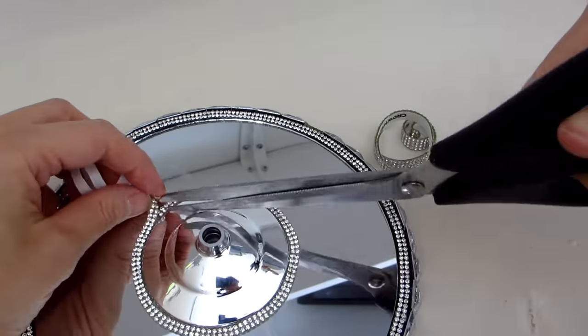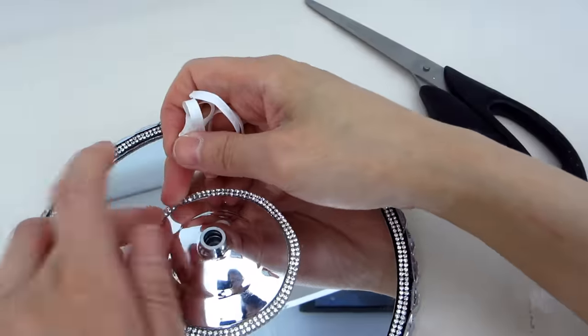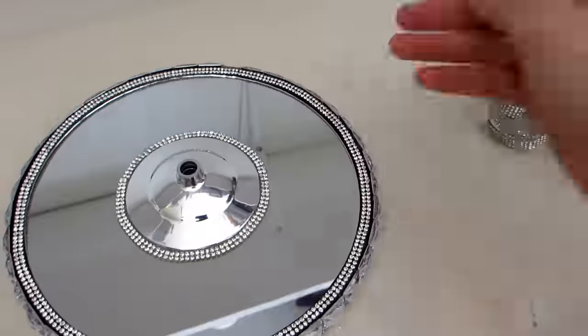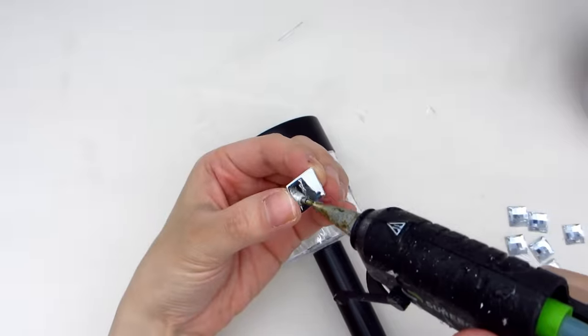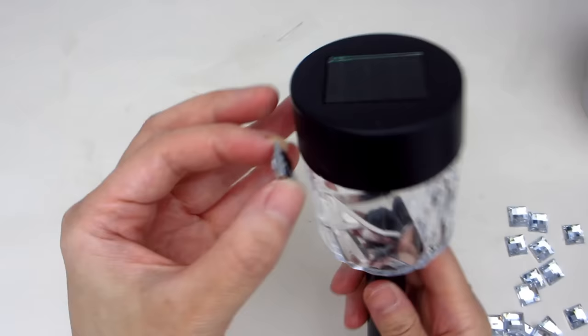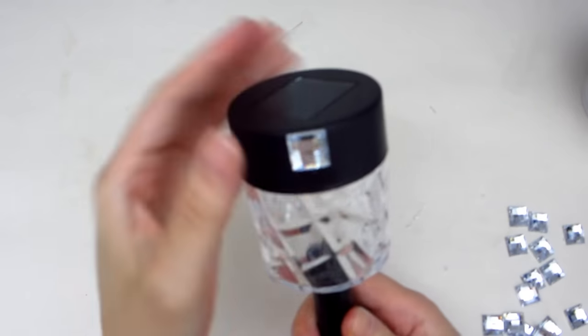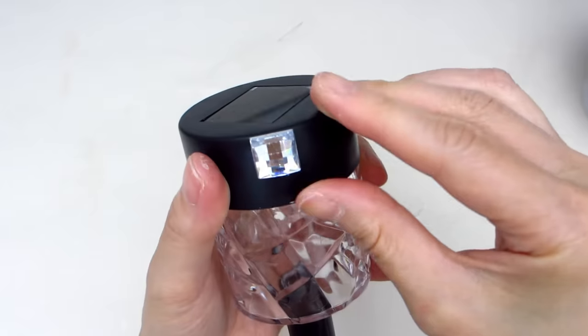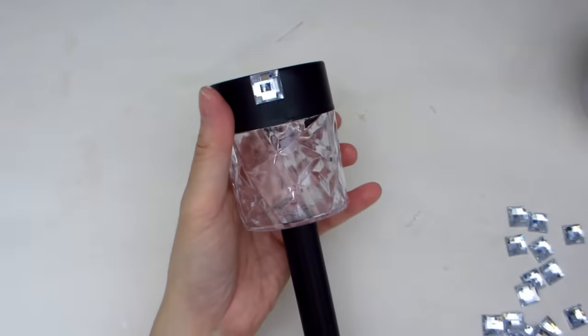This mirror base is already looking beautiful but let's put it aside for now so we can work on the solar garden stick. We're going to take a black solar garden stick and embellish it with some loose flat back gems and rhinestone ribbon just like the ones that we used earlier on the mirror. This will give the entire lamp a more cohesive and consistent look and feel.